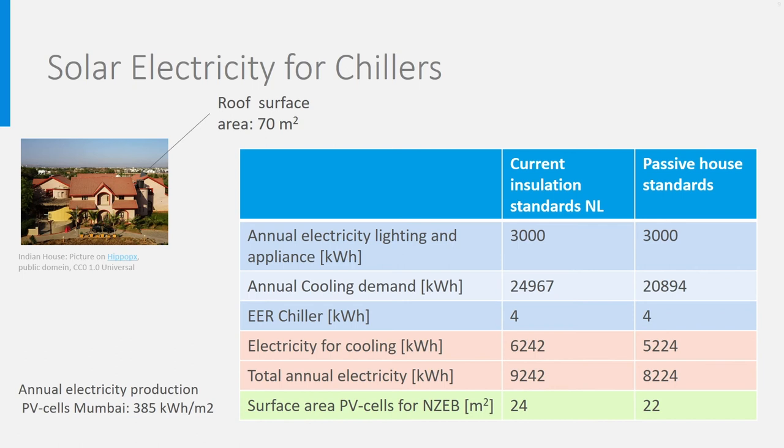If we use a chiller with seasonal cooling COP, also called EER, of 4, we then need 24,967 divided by 4, which is 6,242 kWh electricity for cooling in the well insulated house, while we come to 5,224 kWh in the passive house. So, in total, 9,242 kWh electricity is needed in the first version and 8,224 kWh in the passive house version.